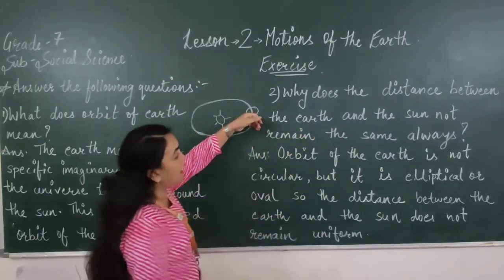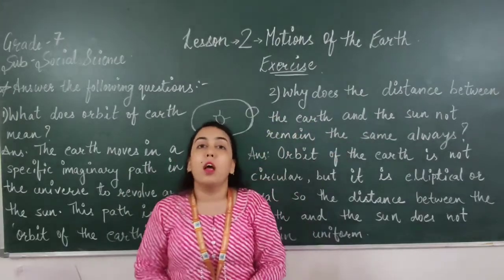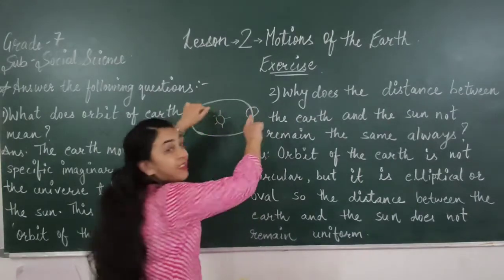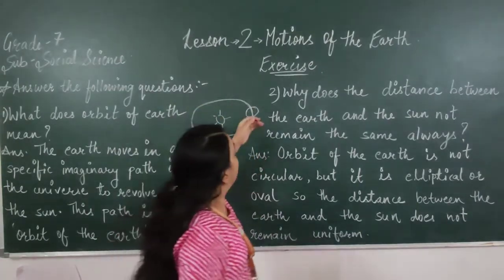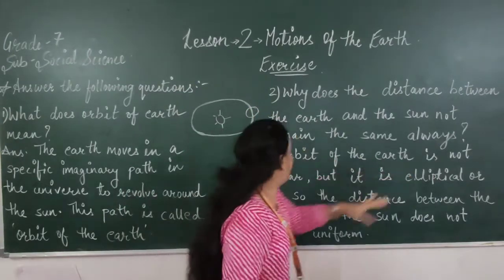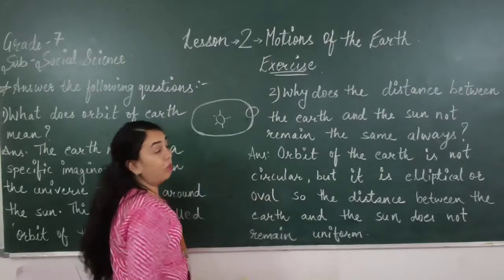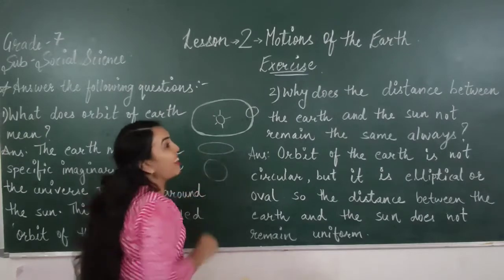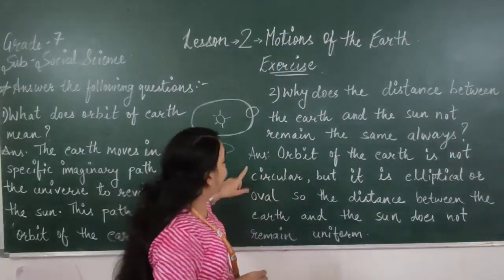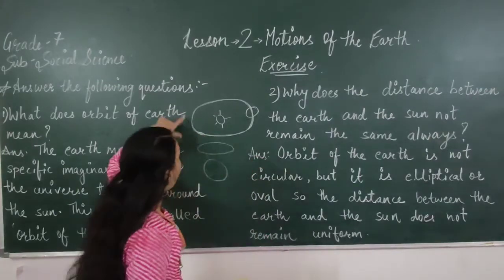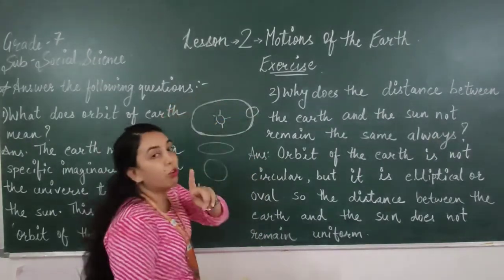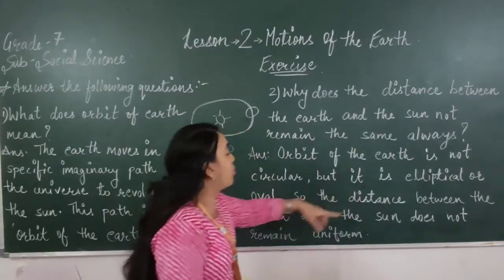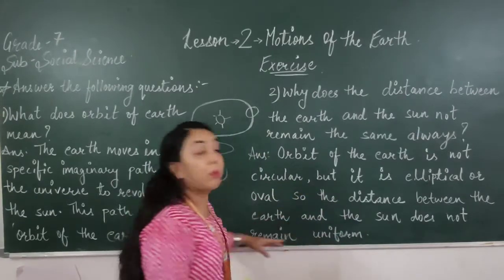Now moving to the next question: Why does the distance between the earth and the sun not remain the same always? Let's see the answer. The orbit of the earth is not circular but it is elliptical or oval in shape — like an egg shape. So because the shape of the orbit is elliptical and not circular, the distance between the earth and the sun does not remain uniform.